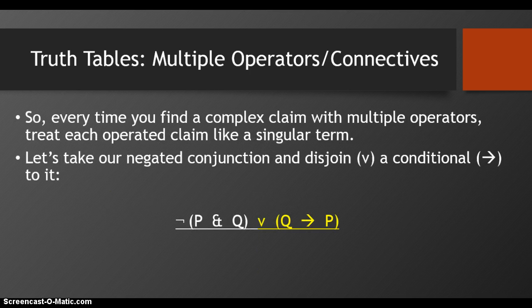Every time we find a complex claim with multiple operators, treat each operated claim like a singular term. Let's take our negated conjunction and disjoin to it a conditional. So we have: it's not the case that P and Q, or if Q then P.